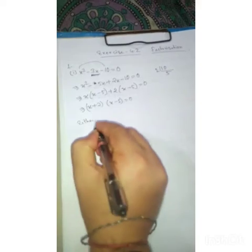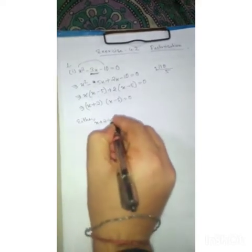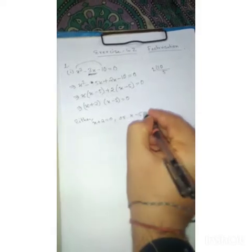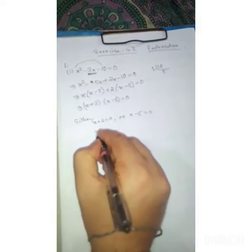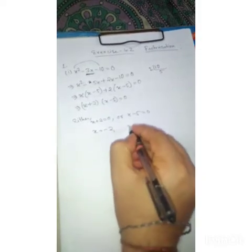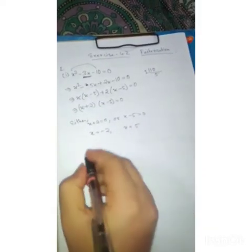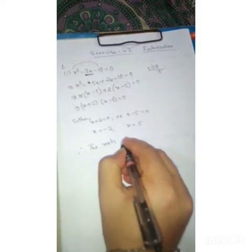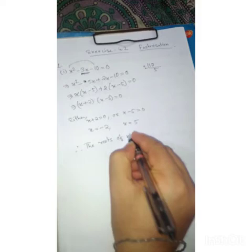Now either x plus 2 equals 0, or x minus 5 equals 0. So x equals, if it goes to this side then it will be minus 2, or x equals 5.